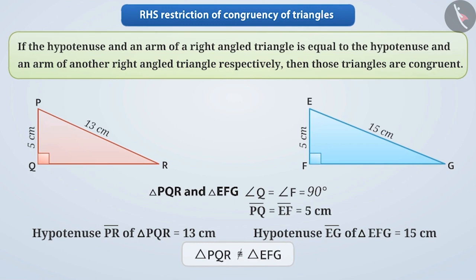So now you must have understood that with the RHS congruency theorem, you can check the congruency of any two right angled triangles.